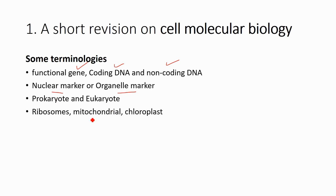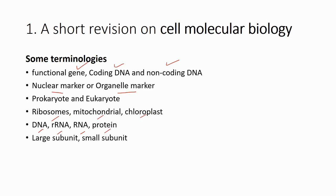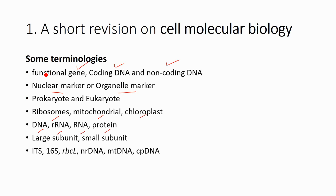We will also talk about some organelles in the eukaryote cell, for example ribosomes, mitochondria, and chloroplasts. And we will discuss DNA, RNA, and protein, as well as large subunit, small subunit, and the names of different genes or different genetic markers.